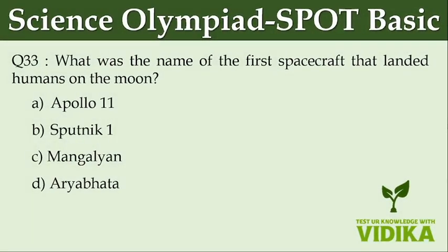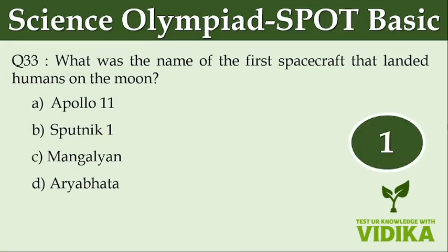What was the name of the first spacecraft that landed humans on the moon? Option A: Apollo 11. Option B: Sputnik 1. Option C: Mangalyaan. Option D: Aryabhata.